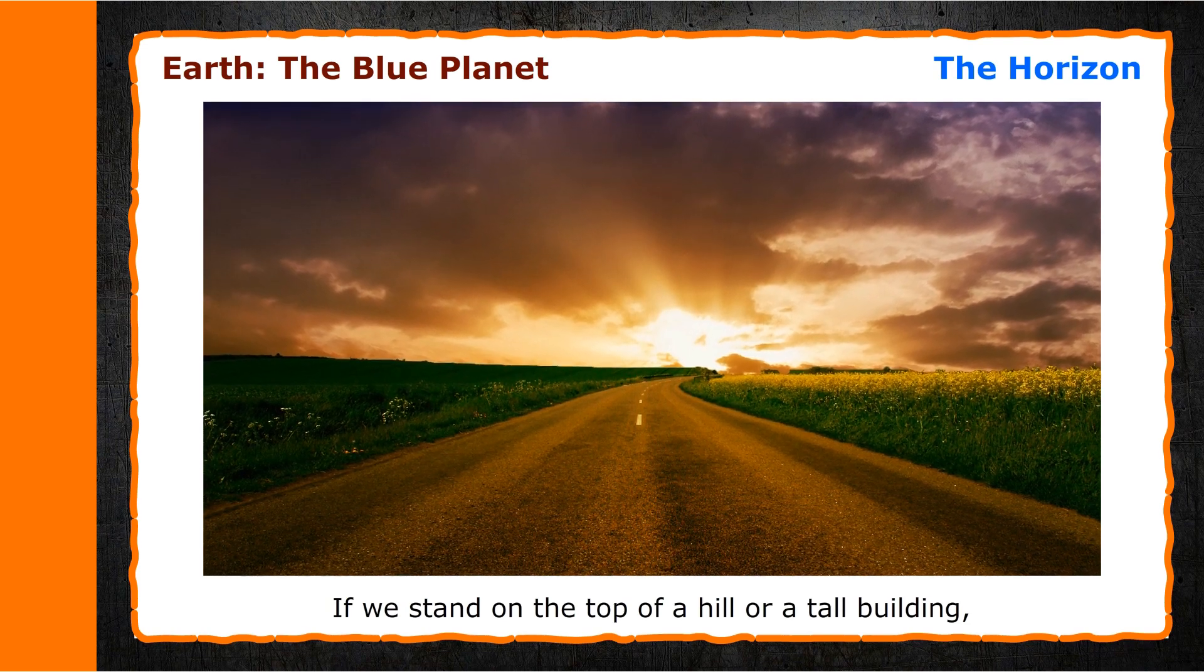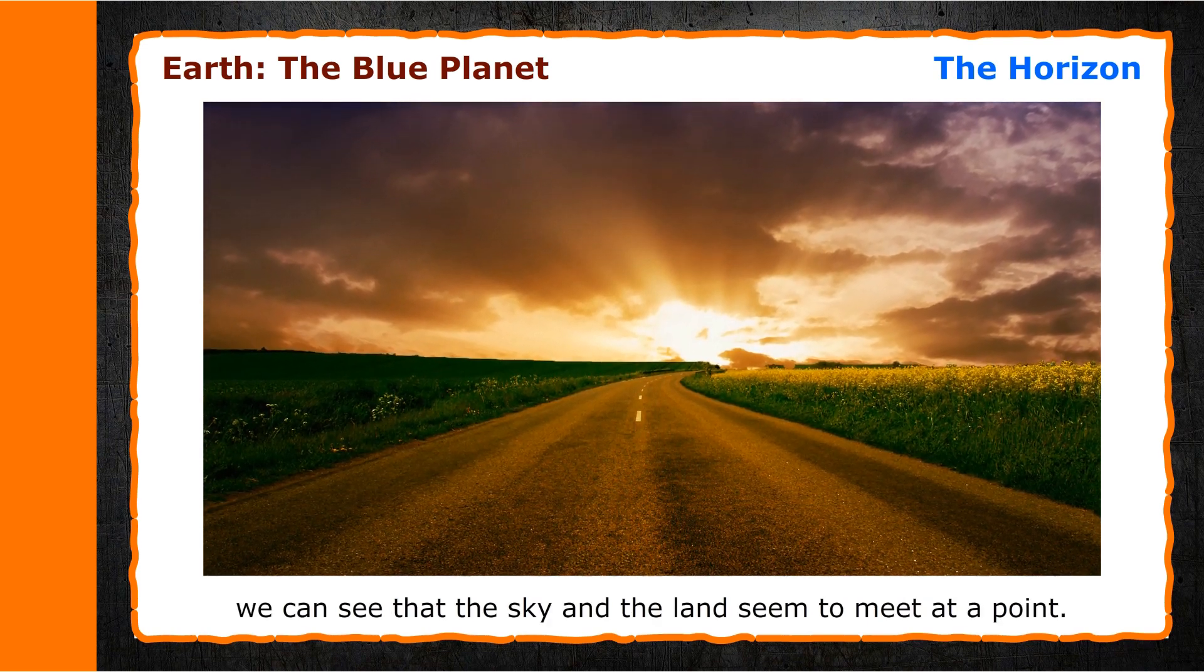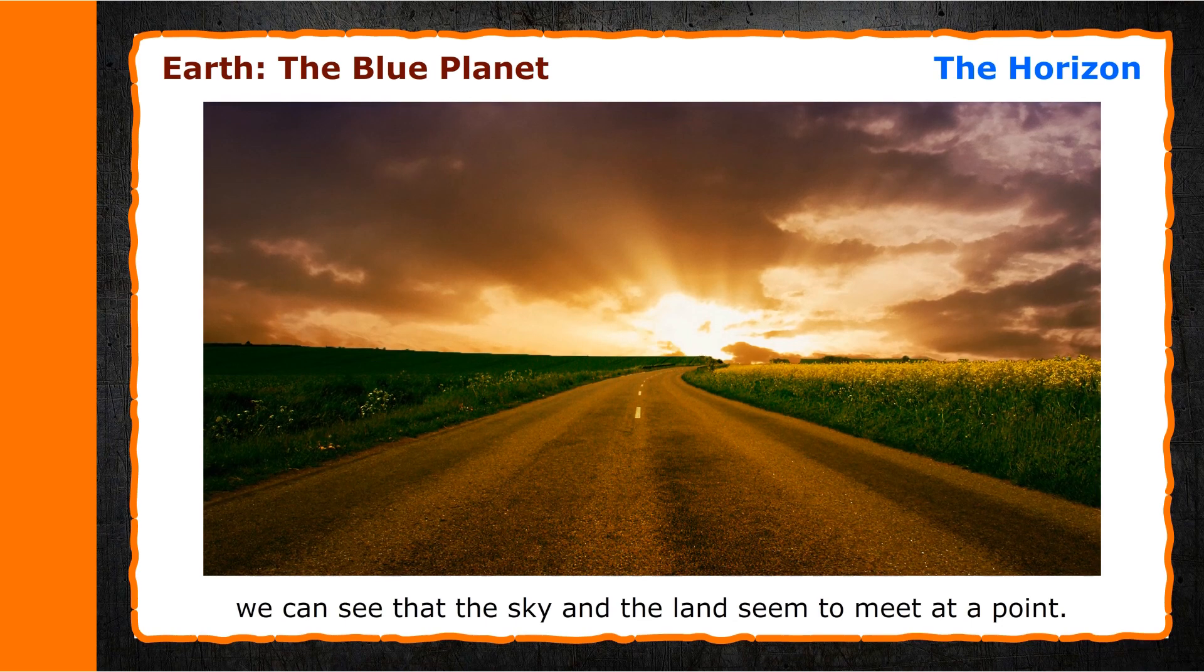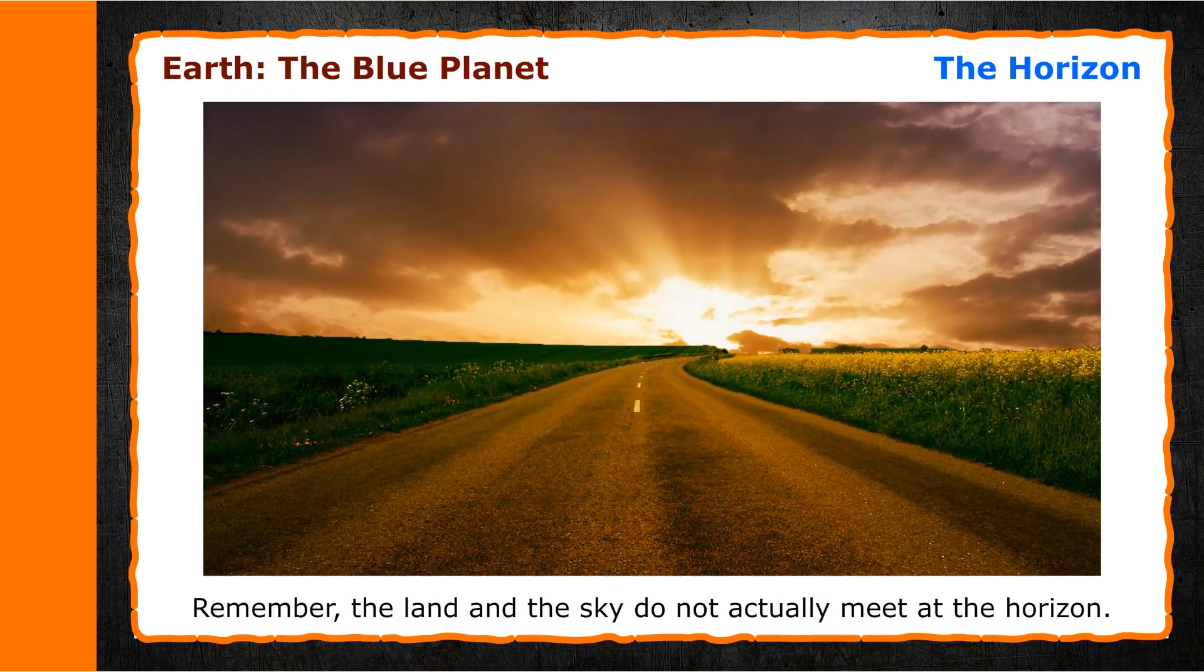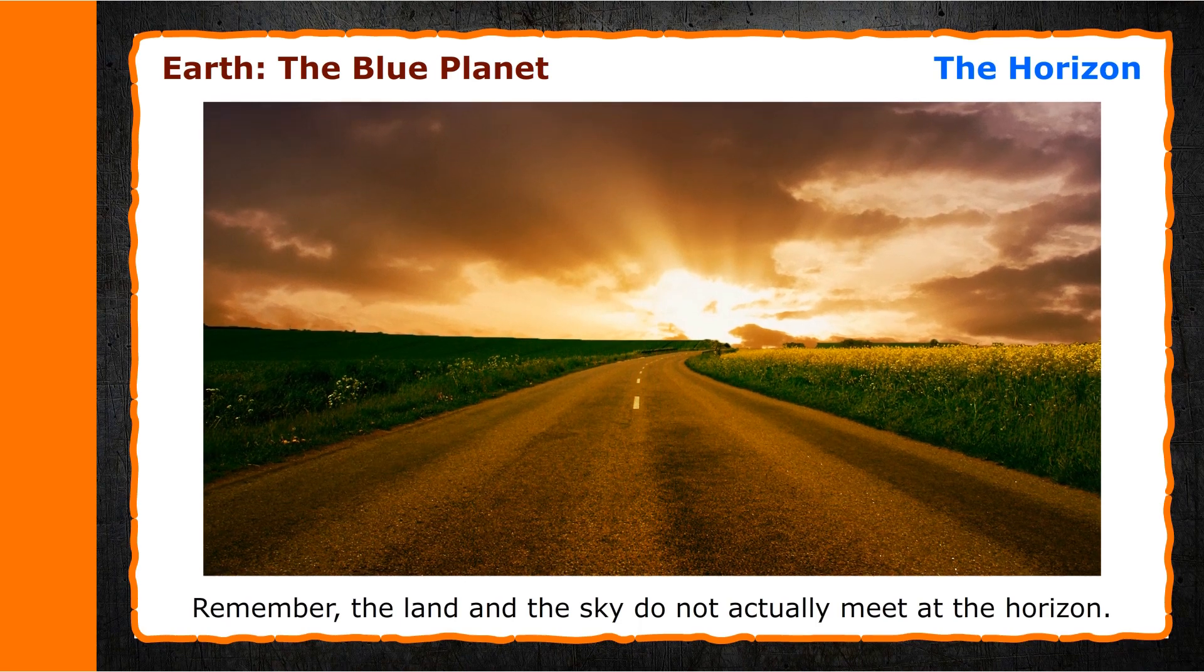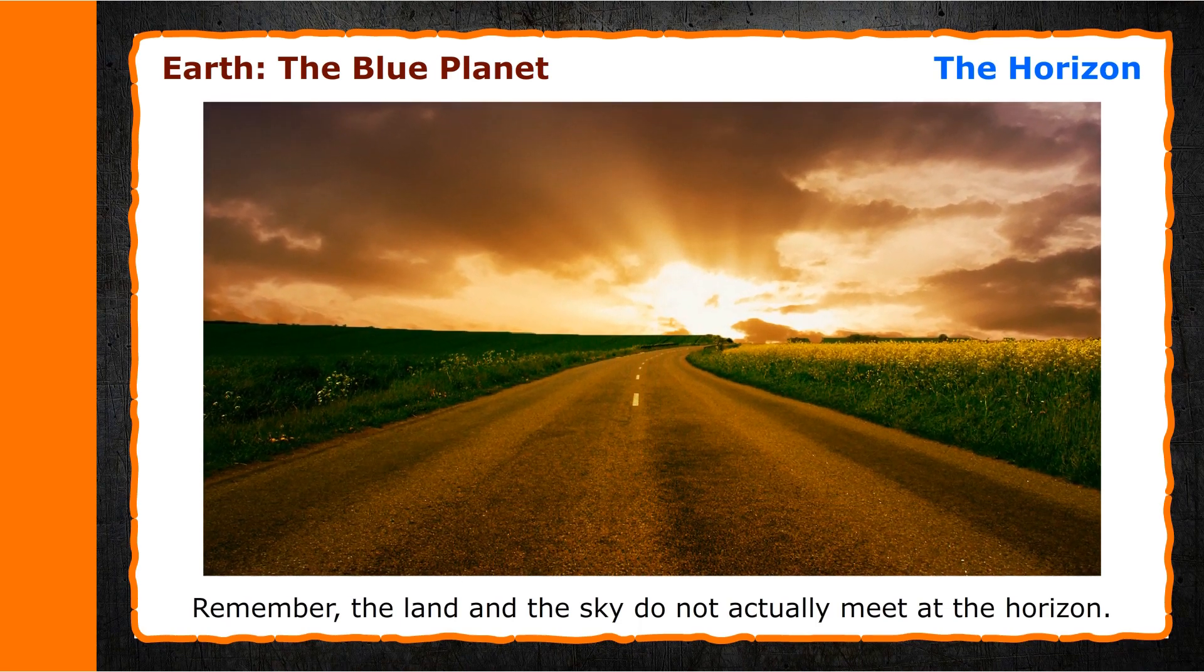If we stand on the top of a hill or a tall building, we can see that the sky and the land seem to meet at a point. This point is known as a horizon. Remember, the land and the sky do not actually meet at the horizon.